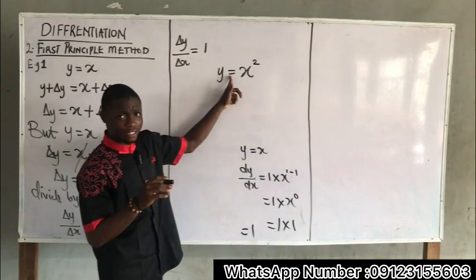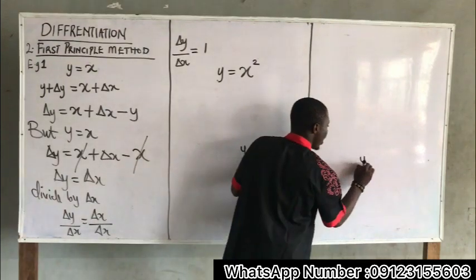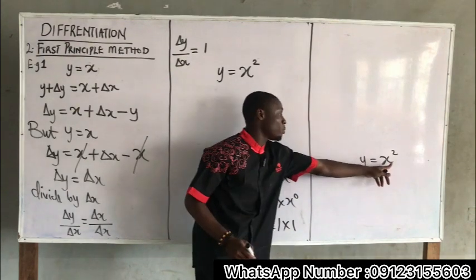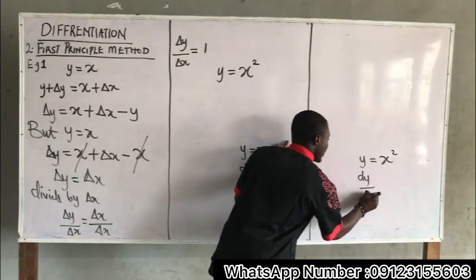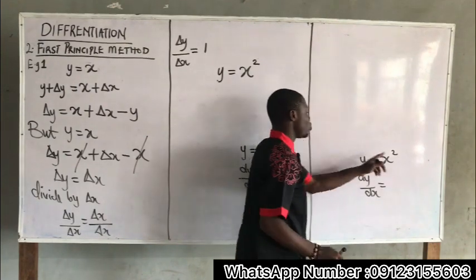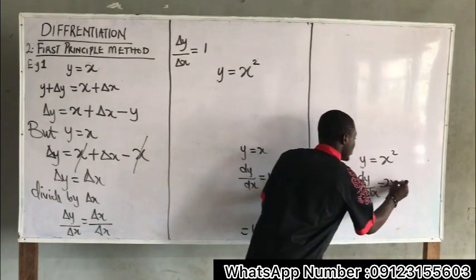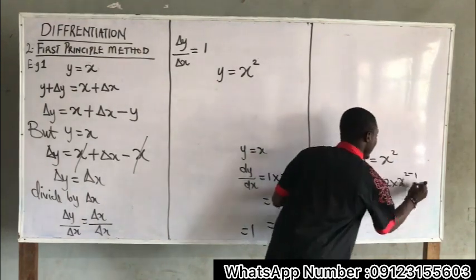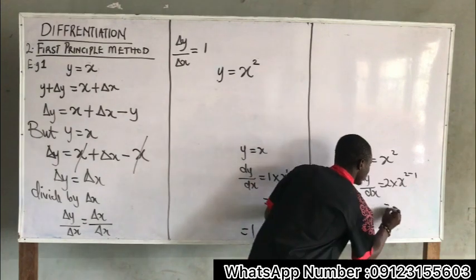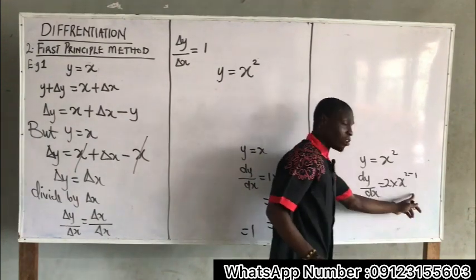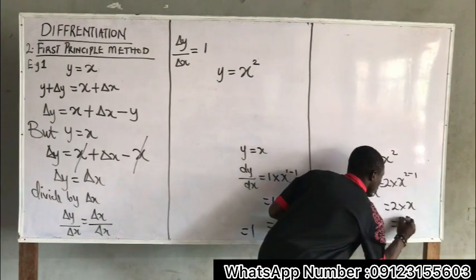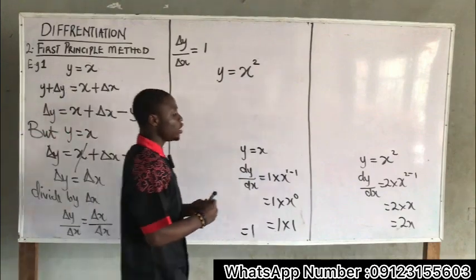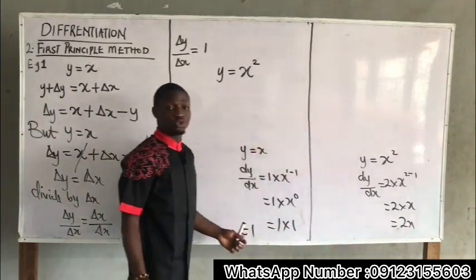Using the general method for y equals x squared: dy/dx equals multiply by the power, which is 2, times x squared, then subtract 1 from the power — 2 minus 1 gives 1. So dy/dx equals 2 times x to the power 1, which is 2x. Now let's apply the first principle method to this and verify we also get 2x.